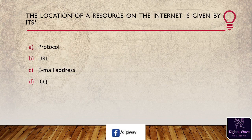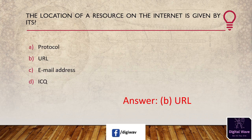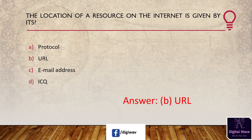Next question: the location of a resource on the internet is given by its — options are: protocol, URL, email addresses, ICQ. The answer is URL. A URL stands for Uniform Resource Locator. It is a reference that describes the resource location on a computer network and the retrieval process. A URL is a different form of URI, which stands for Uniform Resource Identifier.